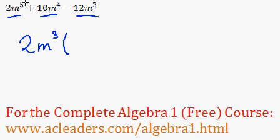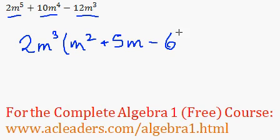Great. So 2m to the 5 divided by 2m cubed is m squared. 10m to the 4 divided by 2m cubed is 5m. And finally, negative 12m cubed divided by 2m cubed is just minus 6 or negative 6. We're not done yet because we can actually factor this trinomial.